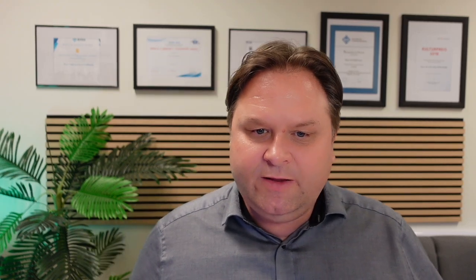On the next slide we see some typical data rates for audio applications, and here it is important to keep in mind what target application we are focusing on. For example, an audio CD uses a frequency band of 20 Hz up to 20 kHz because we want to capture music in the entire human auditory domain.